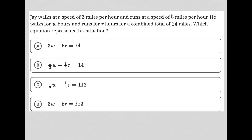This question looks like it's going to be a translation question. The question says J walks at a speed of 3 miles per hour — so I'm going to write 3 miles per hour, and that's walking. And runs at a speed of 5 miles per hour, so R equals 5 miles per hour.